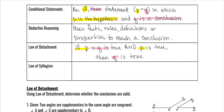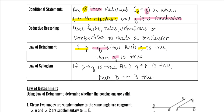The Law of Syllogism says: if p → q is true and q → r is true, then p → r is true. Let me use some colors to help clarify this. If p → q is true and q → r is true, then p → r is true.